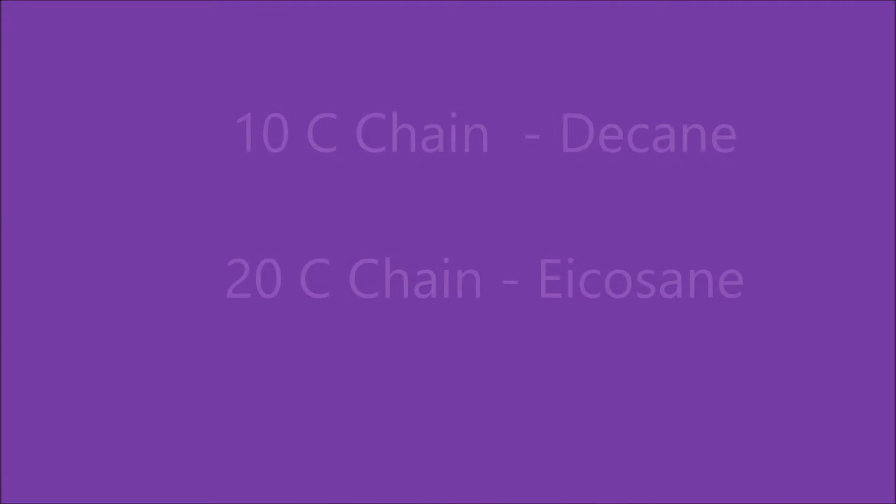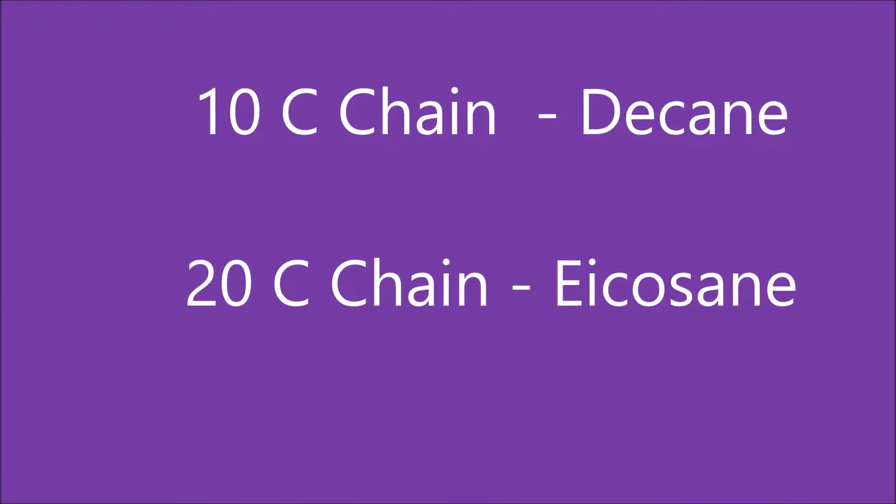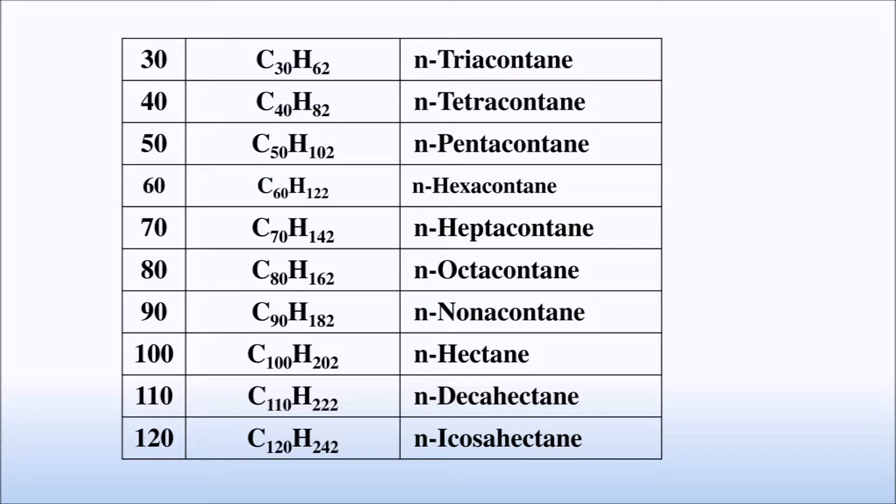Alkanes with 10 carbons is decane and 20 carbons is eicosane. Similarly, 30 carbons is triacontane, 40 is tetracontane, 50 is pentacontane, 60 is hexacontane, 70 is heptacontane, 80 is octacontane, and 90 is nonacontane. Alkanes with 100 carbons is hectane.